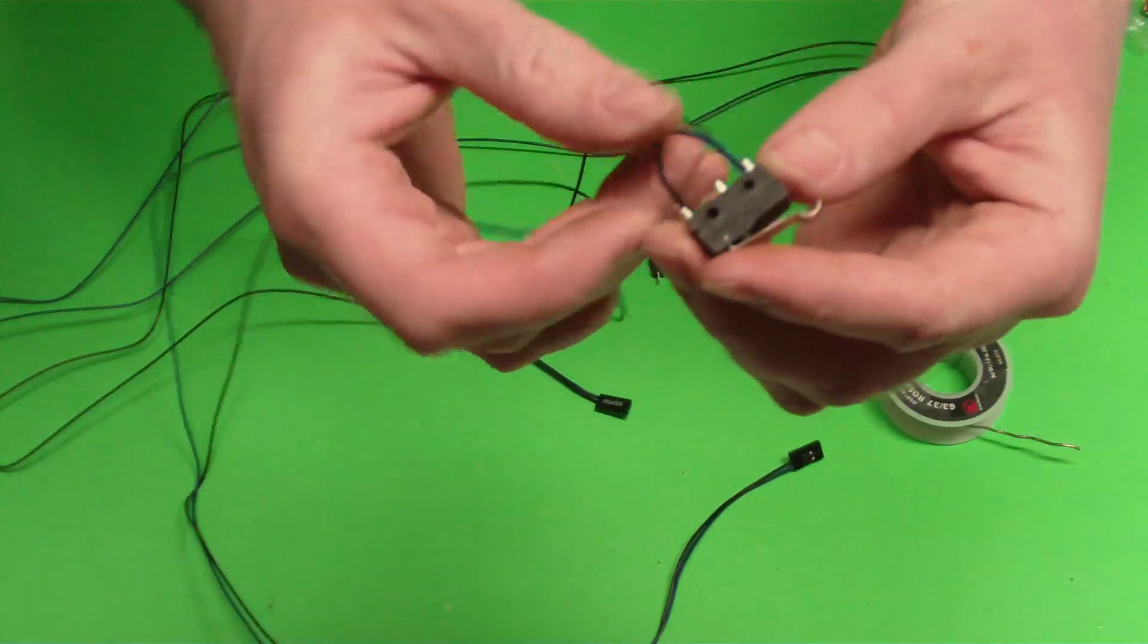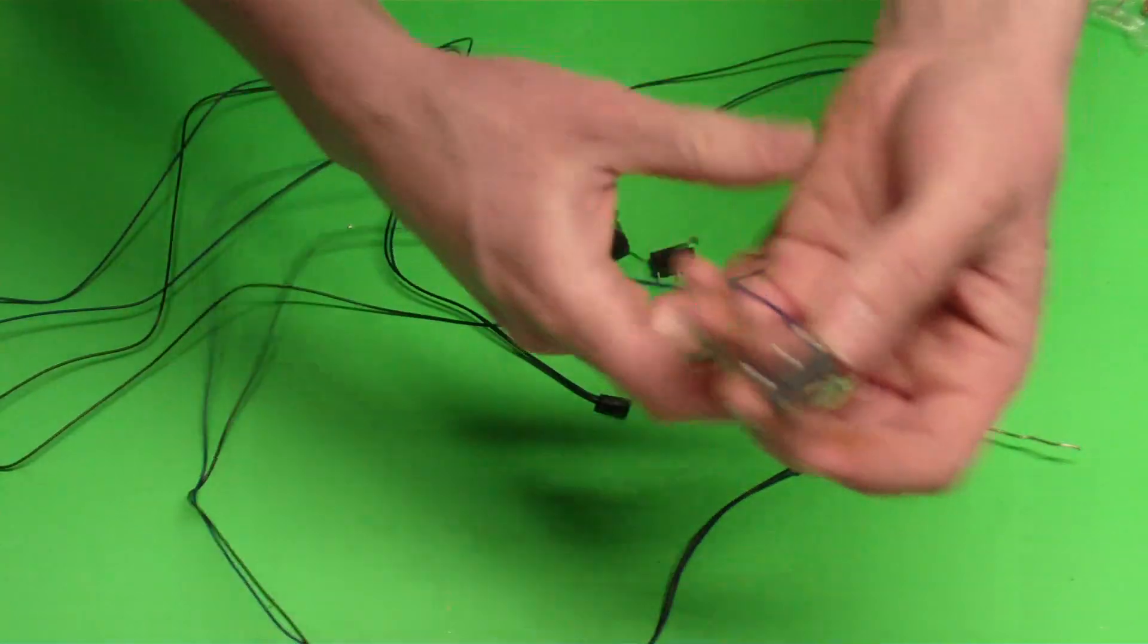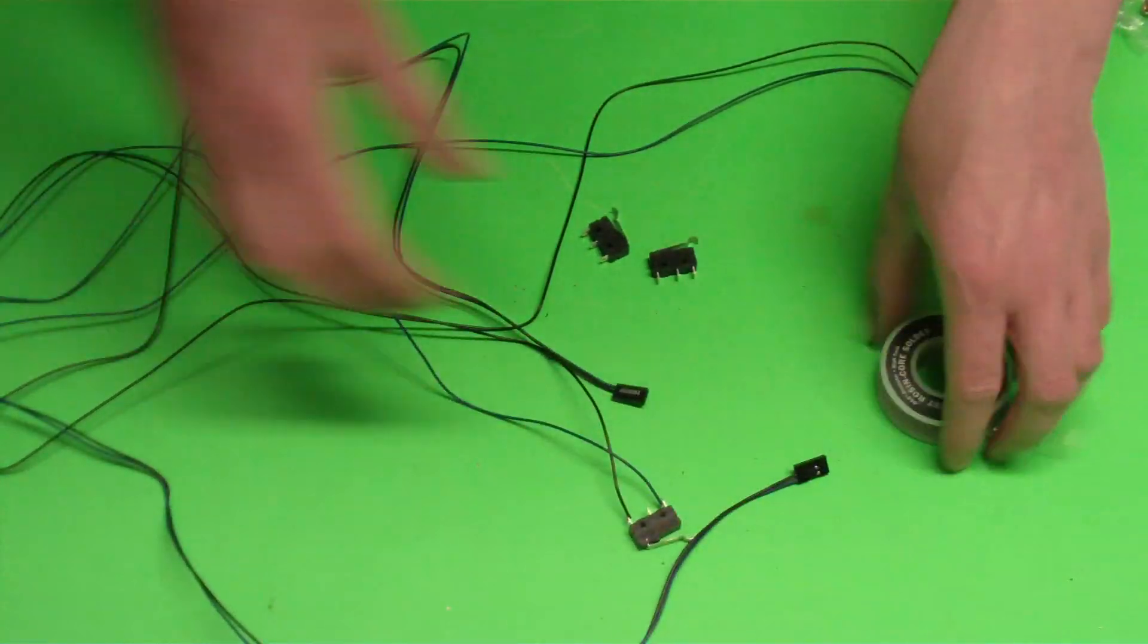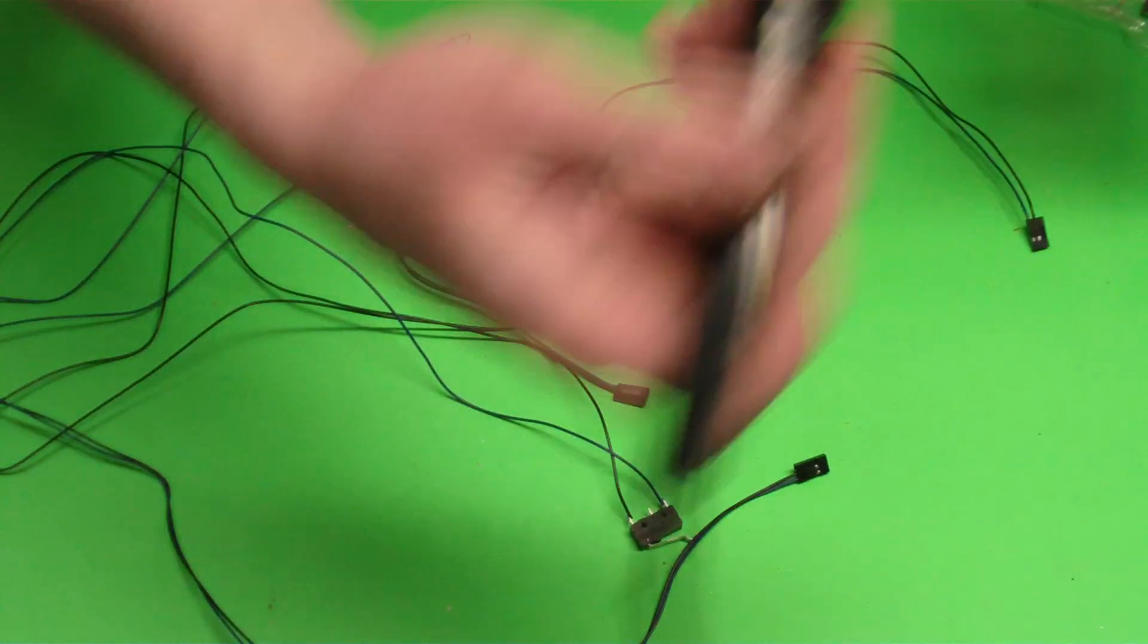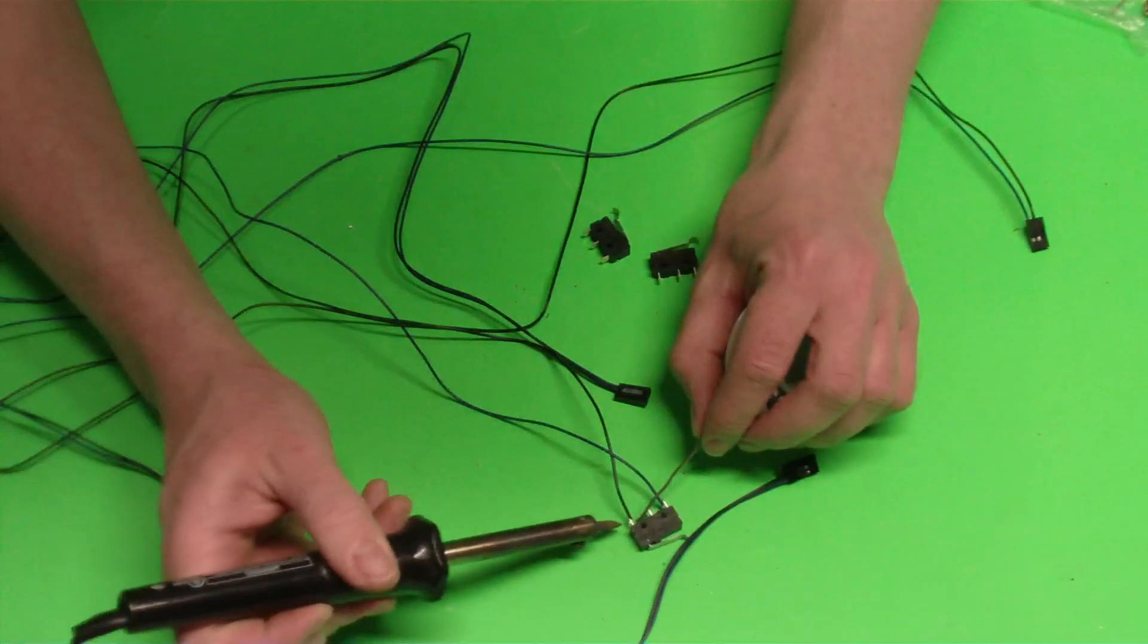I just kind of fold the wires over on there. Then you're going to get your soldering iron and just solder those wires on there.